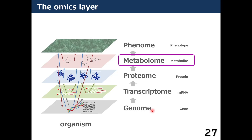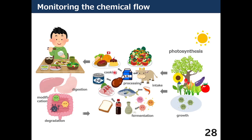One big difference of the metabolome from the other omics is that it requires inputs, such as nutrients, signal molecules, and toxic chemicals. This is quite natural when we think about the human metabolome, which is affected by food intake and the activity of entero bacteria.